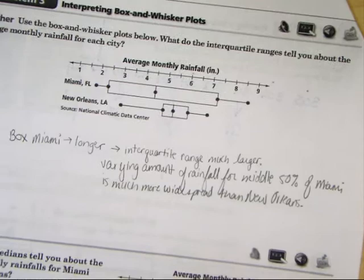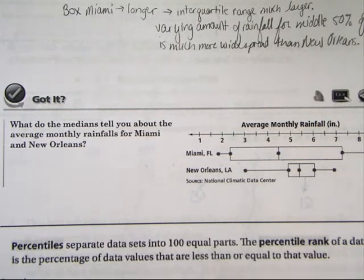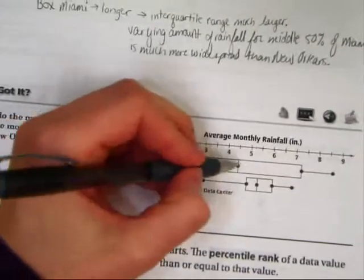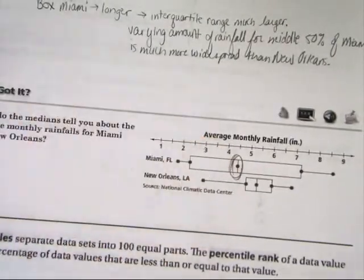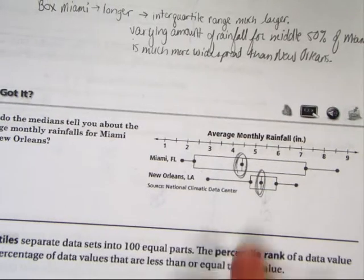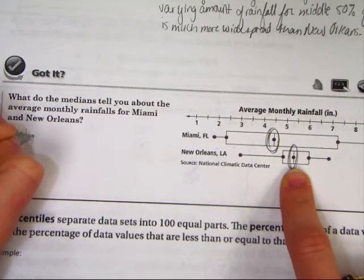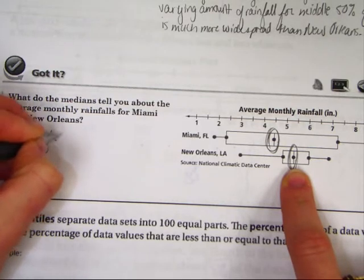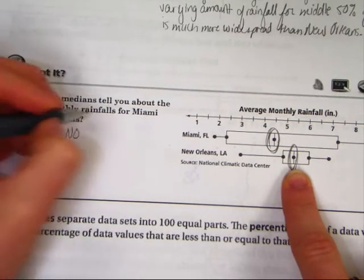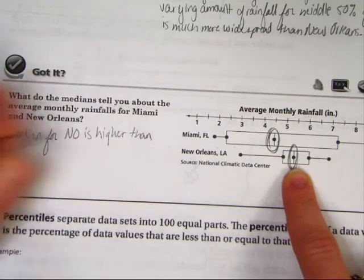Let's take a look at Got It number three and see if we can do this again. It says, what do the medians tell you about the average monthly rainfalls for Miami and New Orleans? Well, here's the median here, and that's for Miami, and here's the median here for New Orleans. You can see that for New Orleans, the median for New Orleans is higher than Miami.